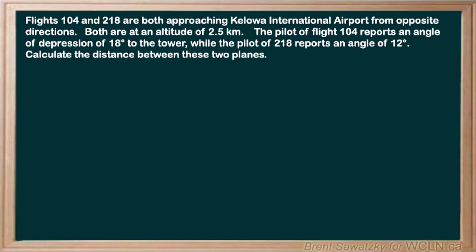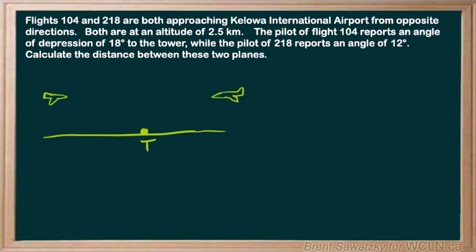Let's start off with a little diagram — that's probably the best bet in all of these questions. They're both looking at a tower on the ground, so let's identify this as our tower here. We have a plane coming in over here, and we have a plane coming in over here. What we're interested in is the distance between these two planes.